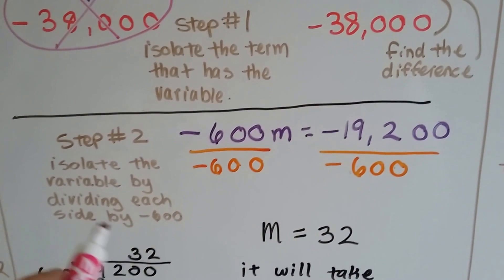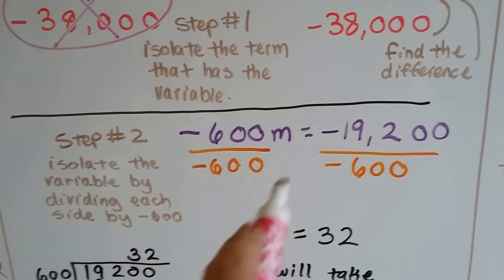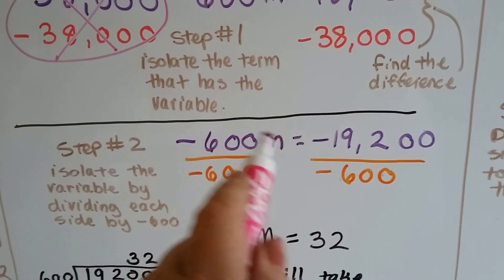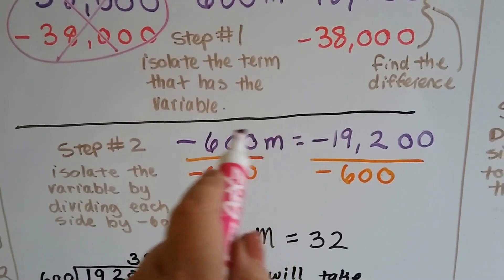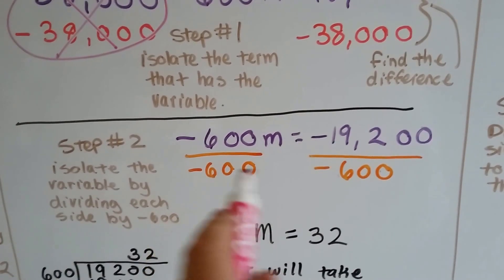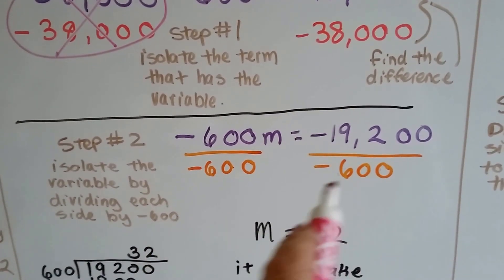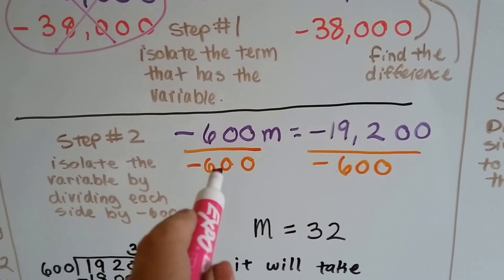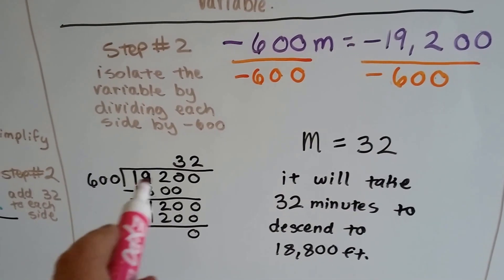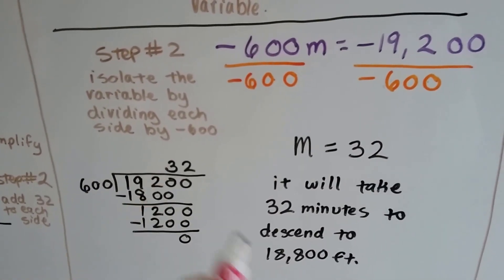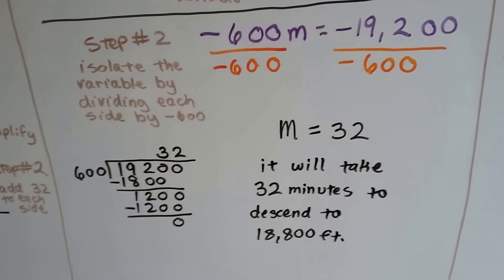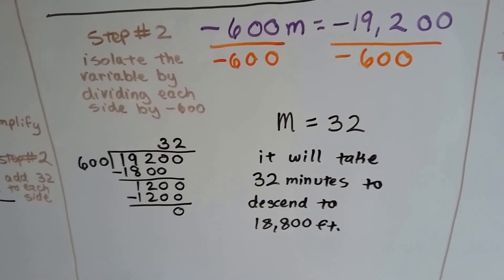Step two is to get m by itself. Because this is multiplication — negative 600 times m — the inverse operation is division. We divide both sides by 600. 19,200 divided by 600 is 32. So it's going to take 32 minutes to descend to 18,800 feet.